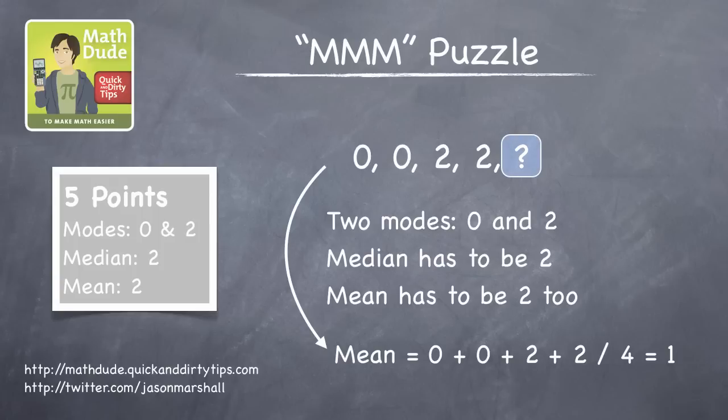That works out well for the median as well, because we know that our five numbers must look like 0, 0, 2, 2, something. So 2 is guaranteed to be the median, just as we need.